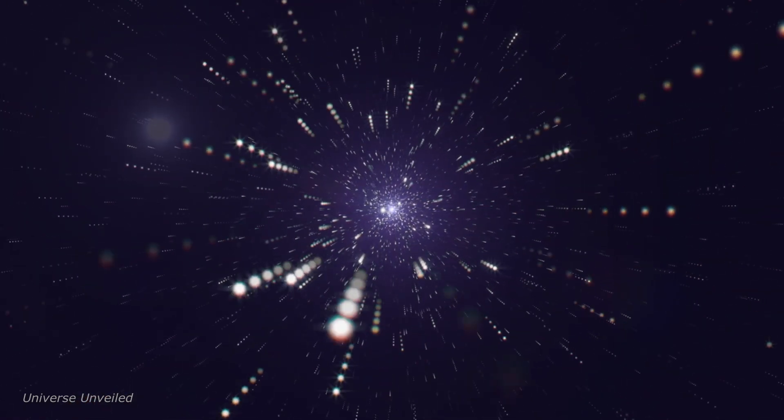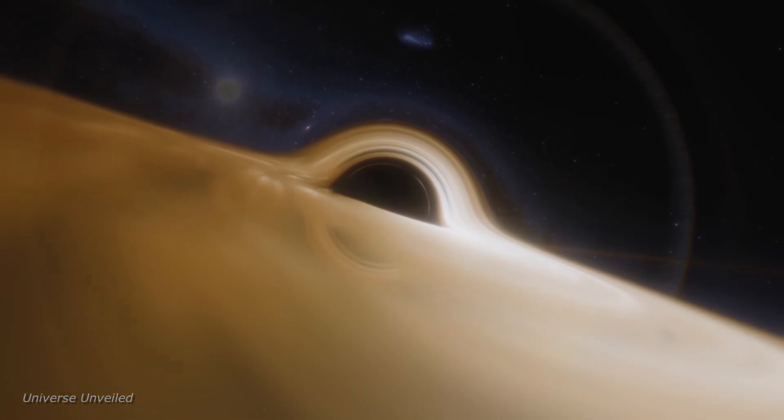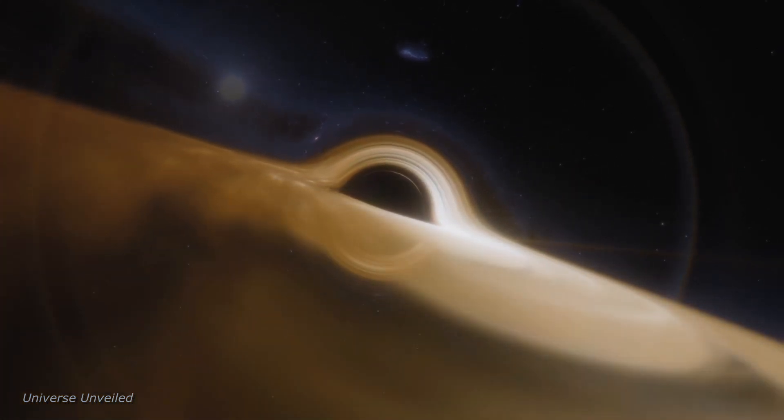Gravitational lensing is a powerful tool for astronomers, allowing them to study objects that would otherwise be too faint or distant to observe. When a massive object, such as a supermassive black hole, aligns perfectly with a more distant object, its gravity acts as a cosmic lens, bending and magnifying the light from the background object.